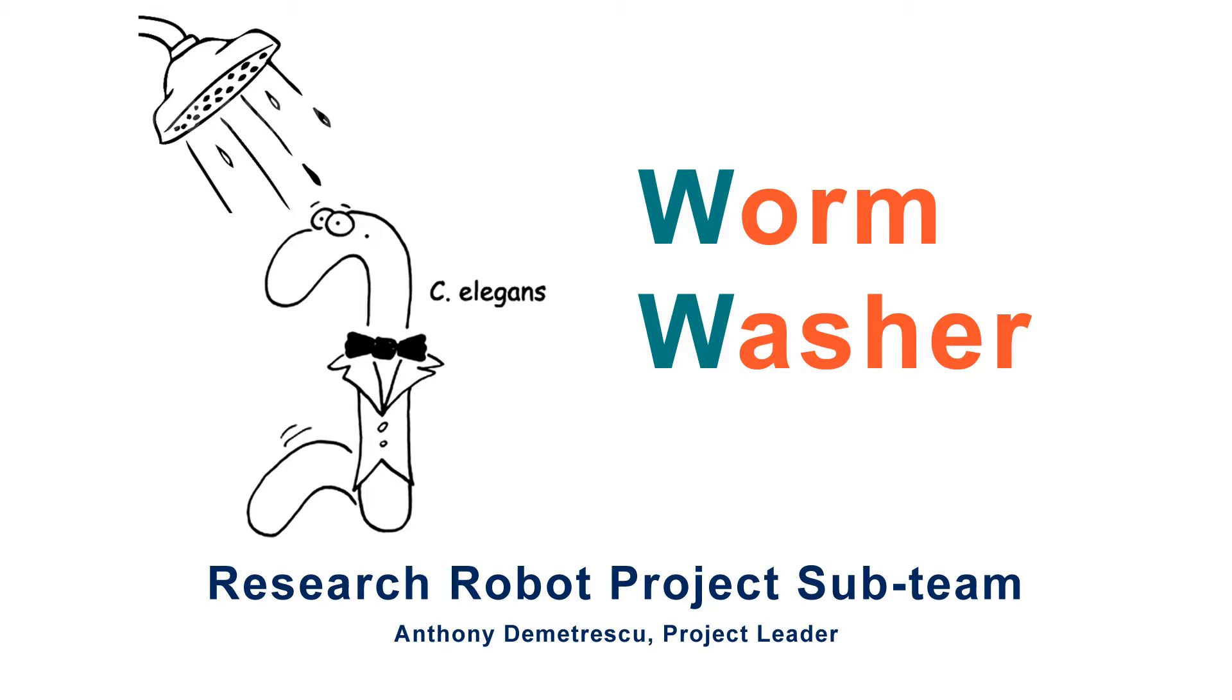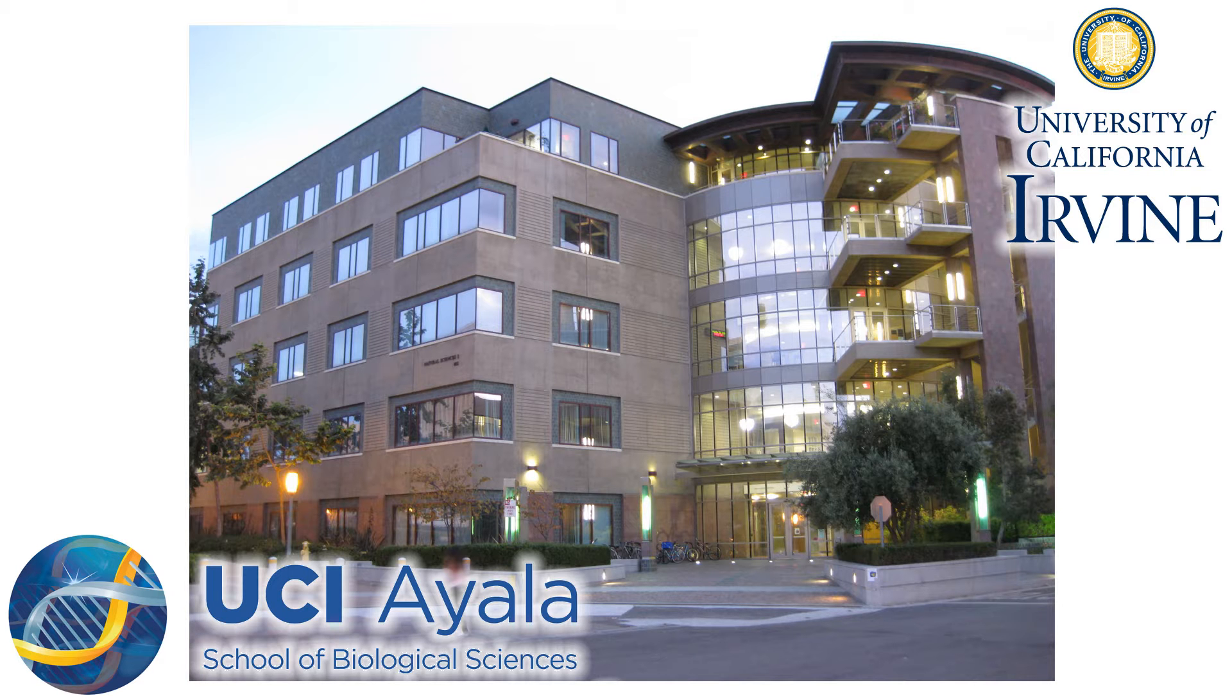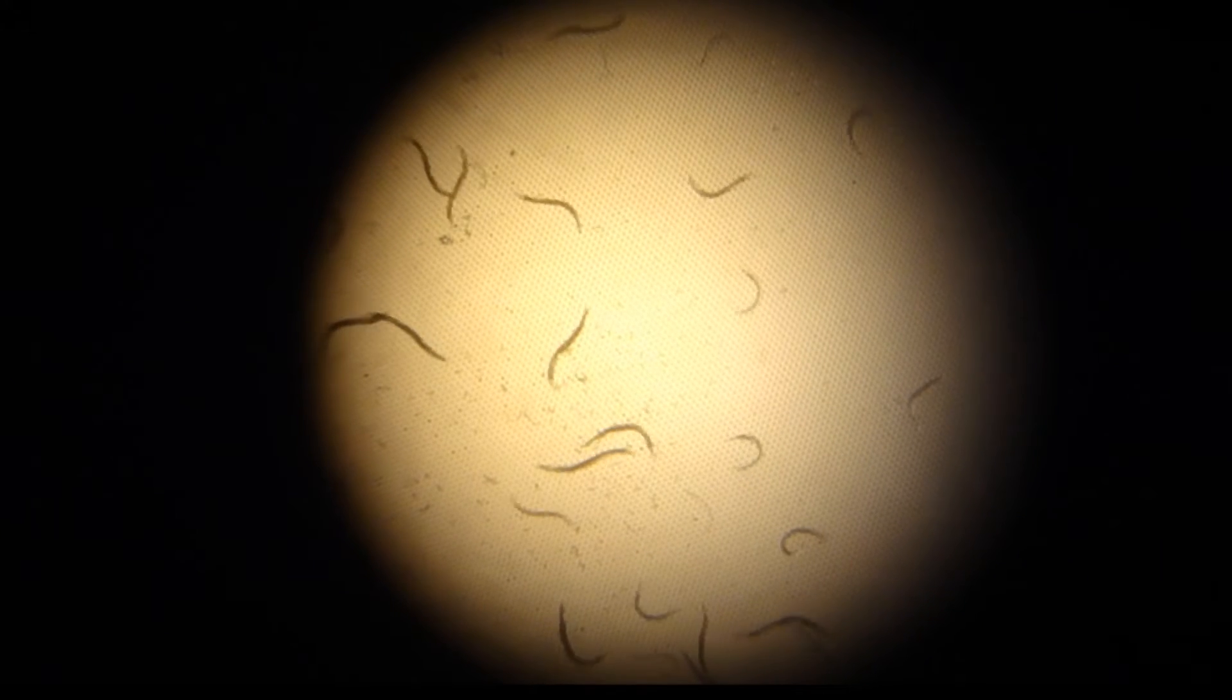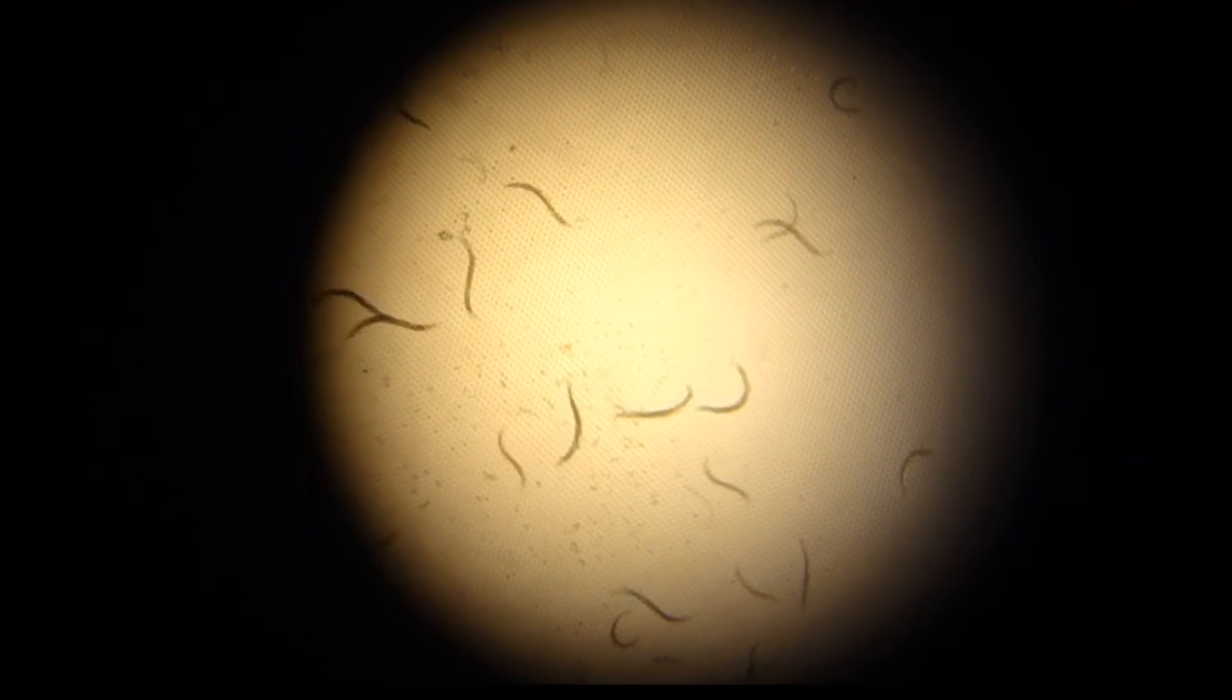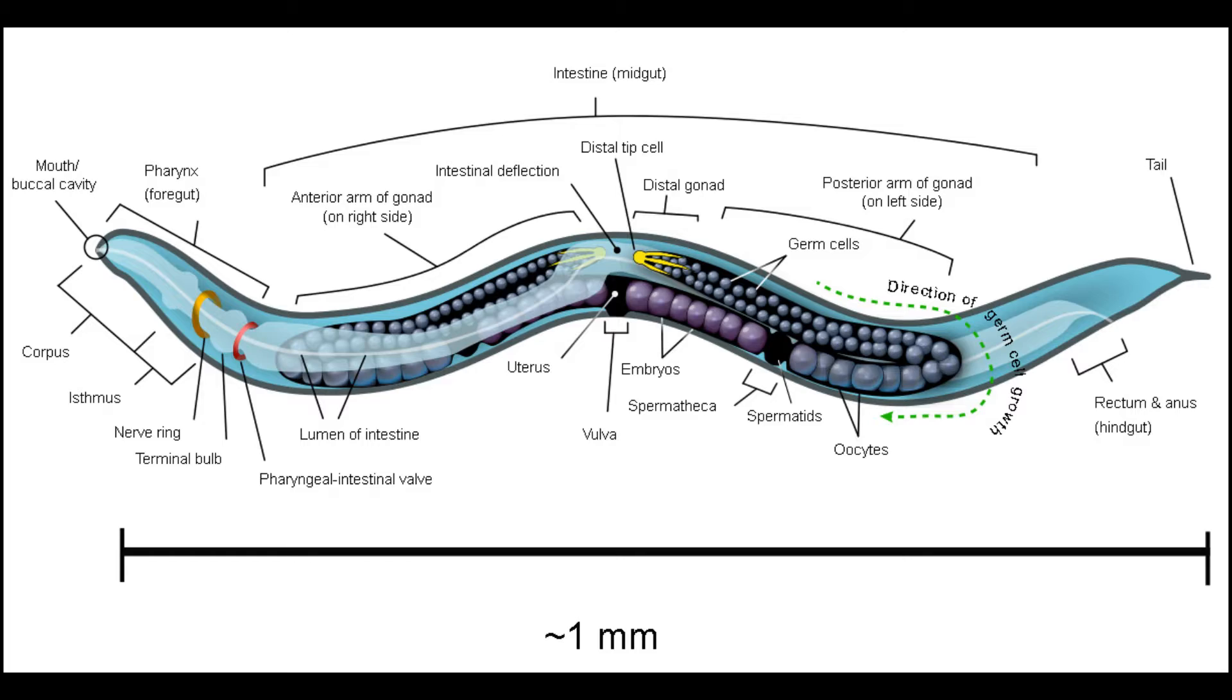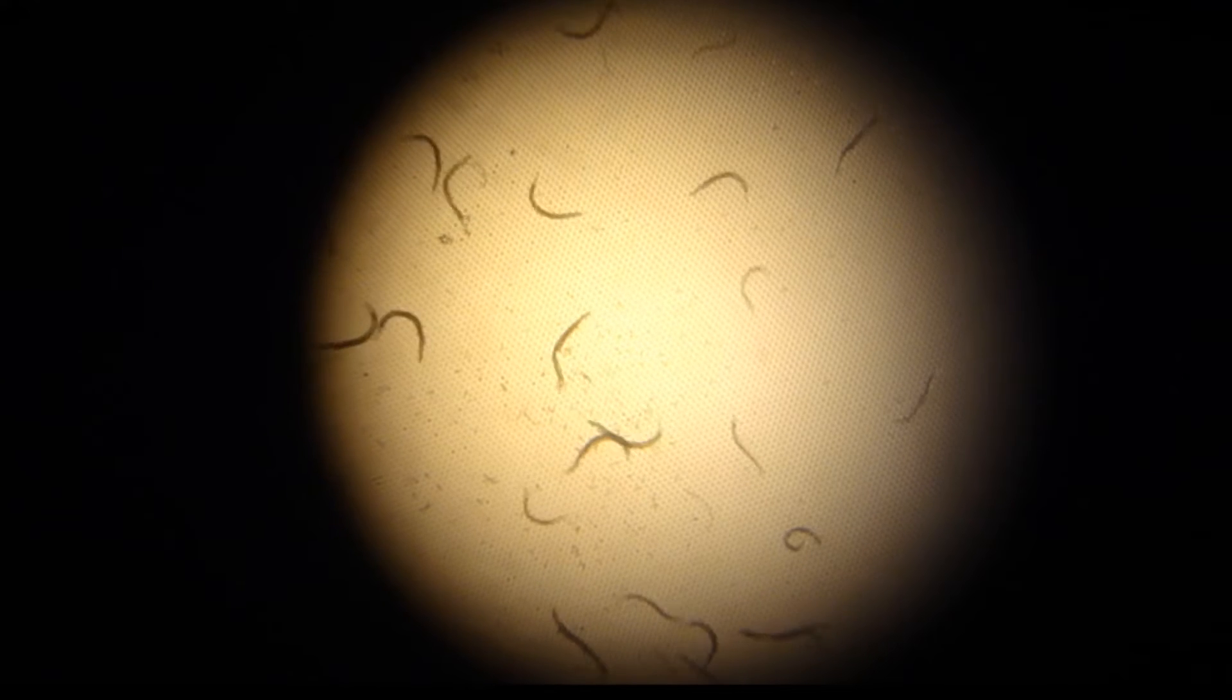We designed our system to assist Dr. Cinquin's lab at the UCI School of Biological Sciences. Dr. Cinquin's research centers on developmental and cell biology, and he often performs genetic modification experiments on the C. elegans worm. The C. elegans worm is the first animal to have its entire genome sequenced and has approximately 100 million base pairs of DNA.